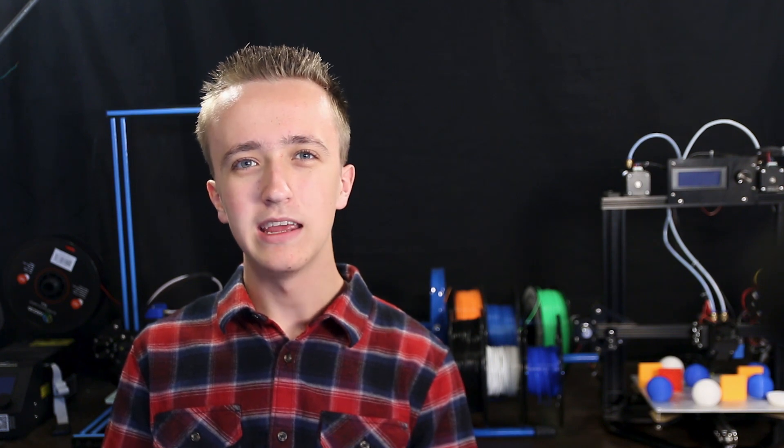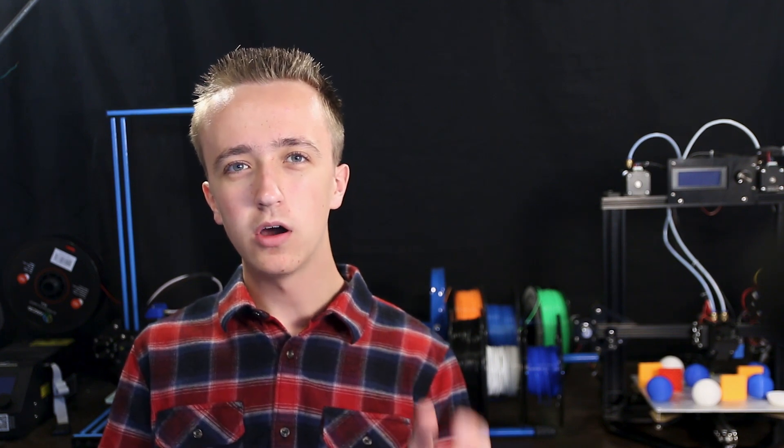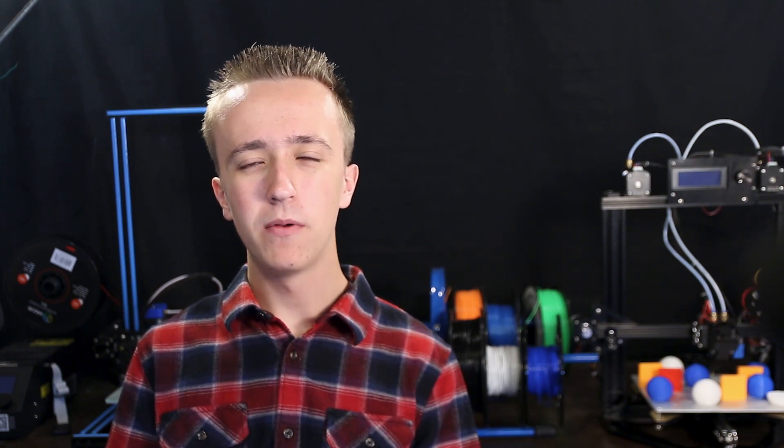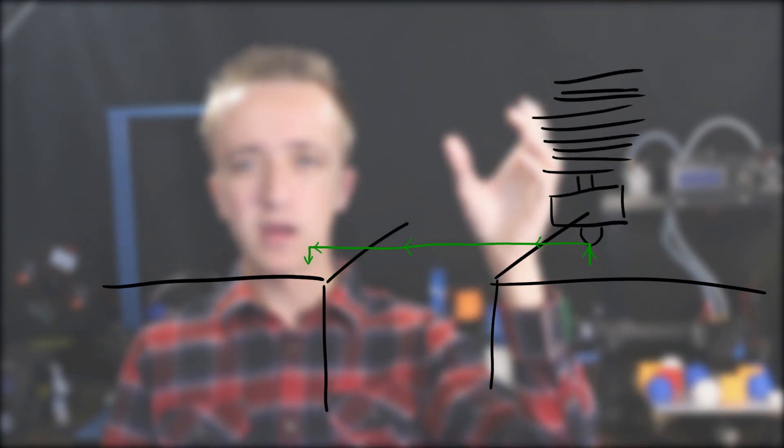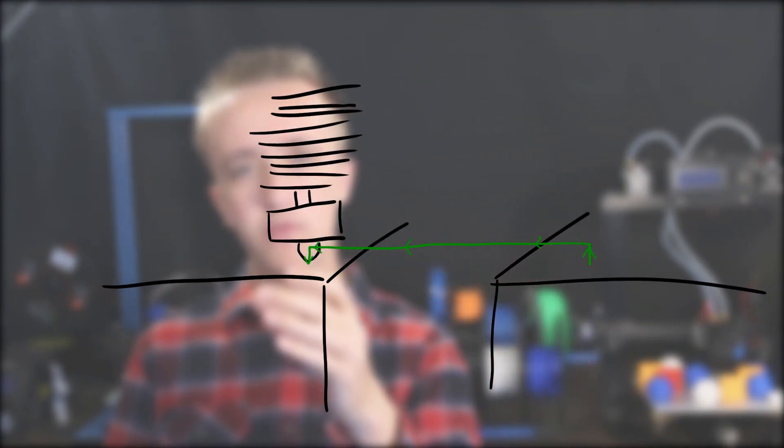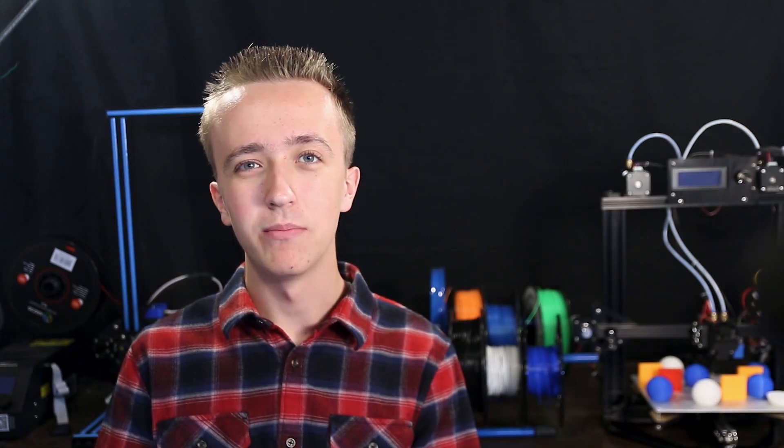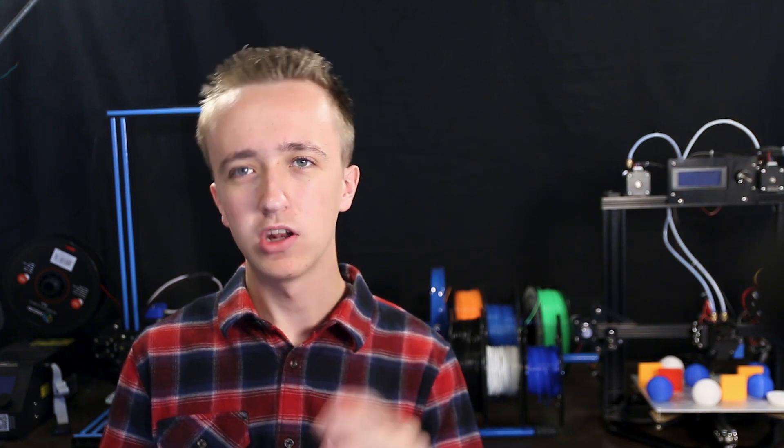This one can come in really handy if you have a problem where the hotend drags over your print and creates an ugly streak in the top layer. As if you enable the Z-hop, it always lifts up the hotend when it moves to a different spot. This of course also adds some print time as it has to go up and down every time. On delta printers, the print time added is not as much as on traditional printers, but it still is there.